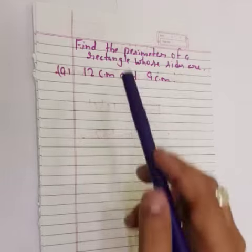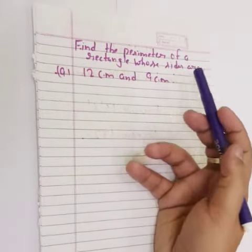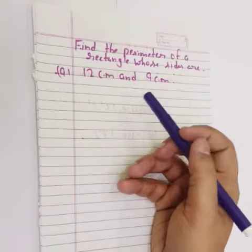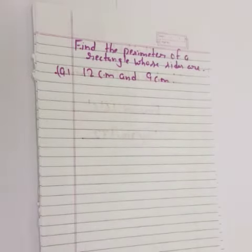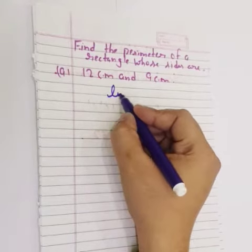The first problem is: Find the perimeter of a rectangle whose sides are 12 cm and 9 cm. This means the length is 12 cm.